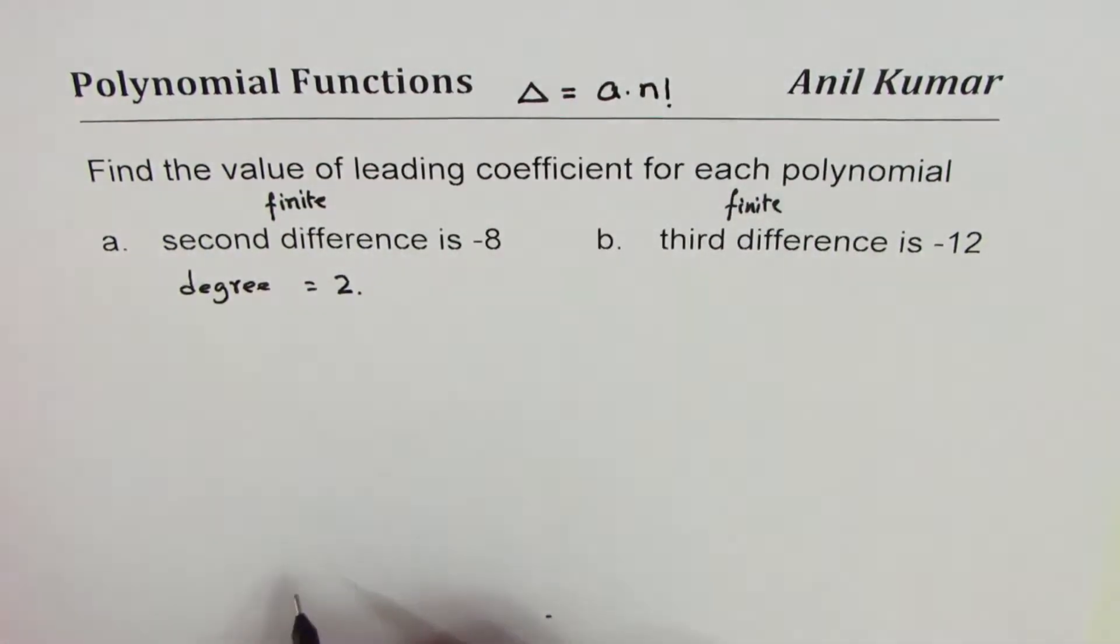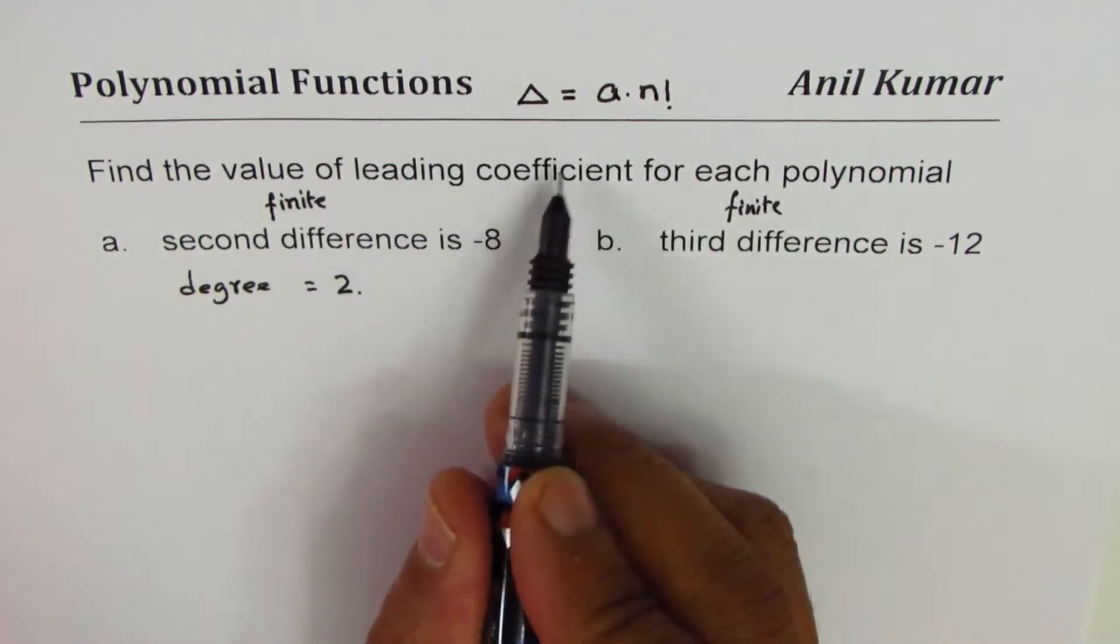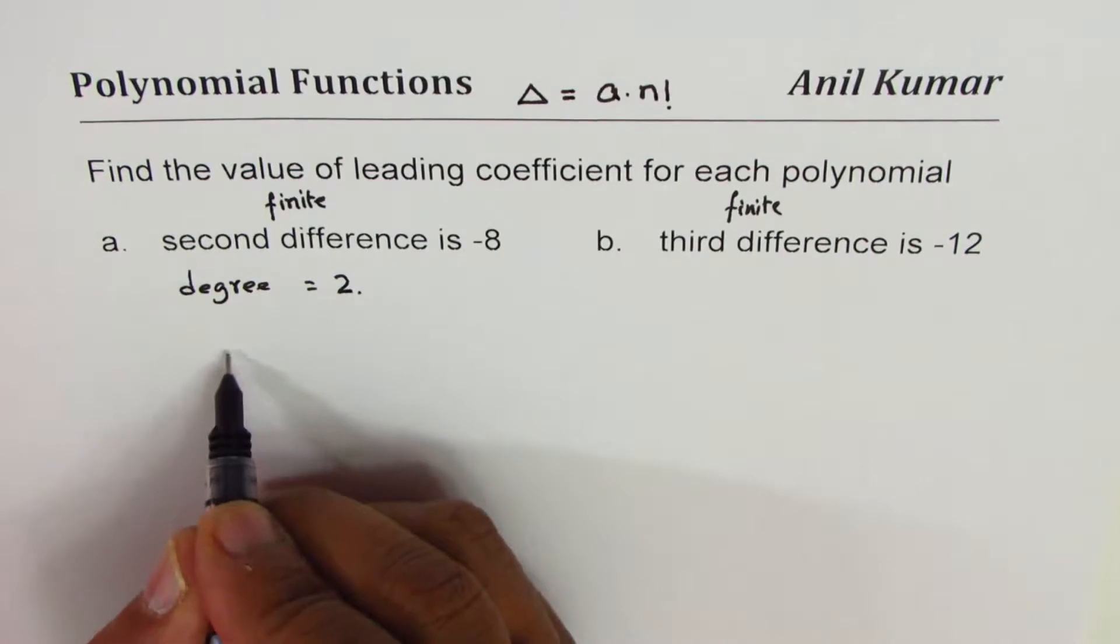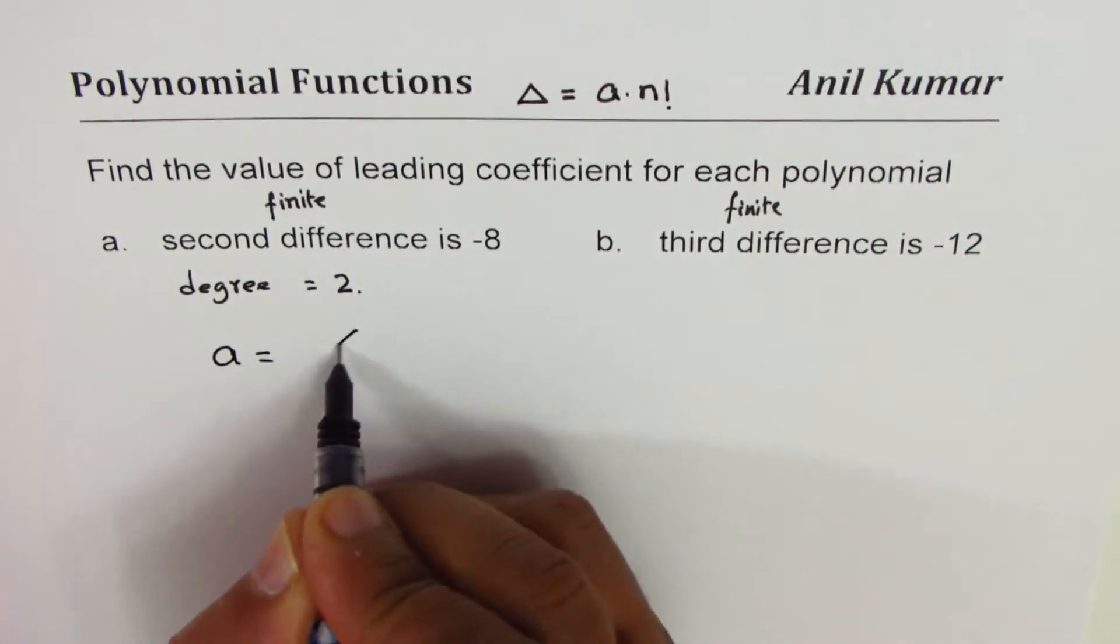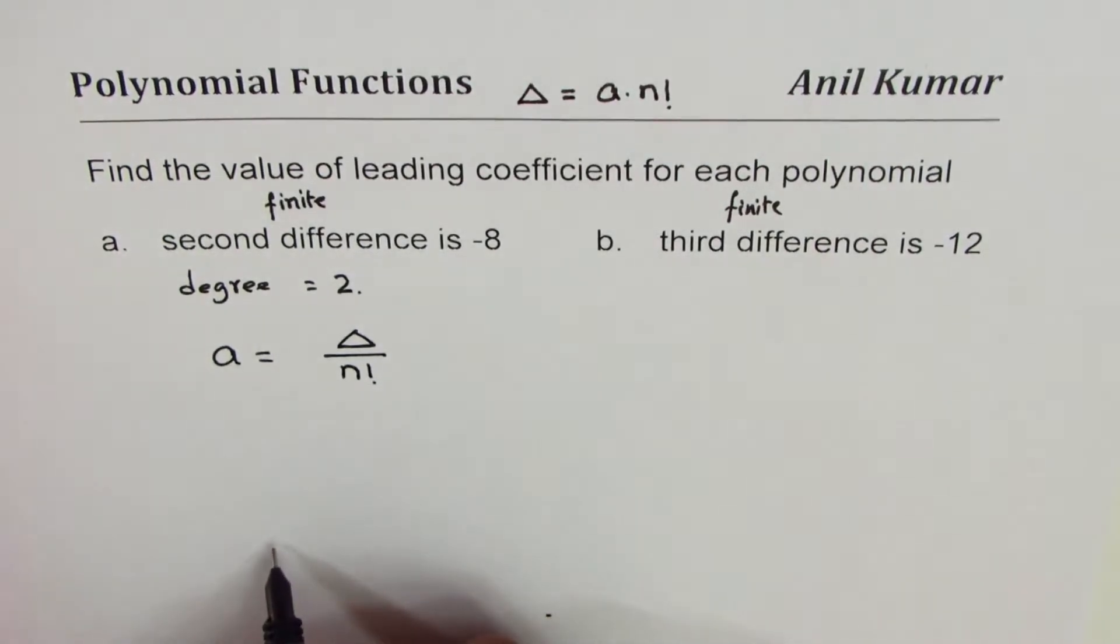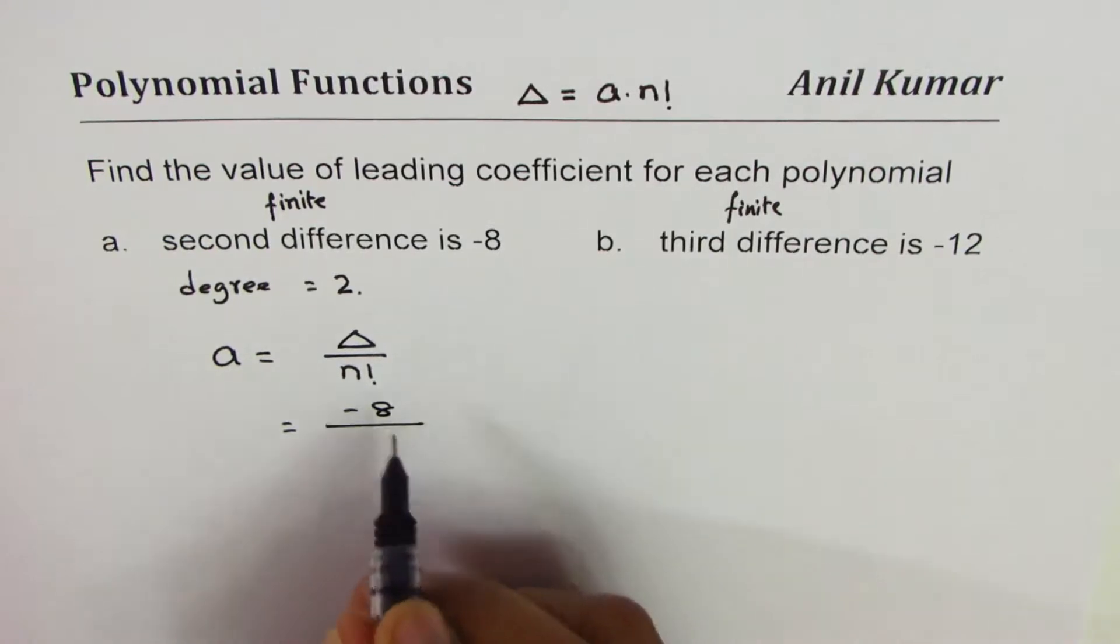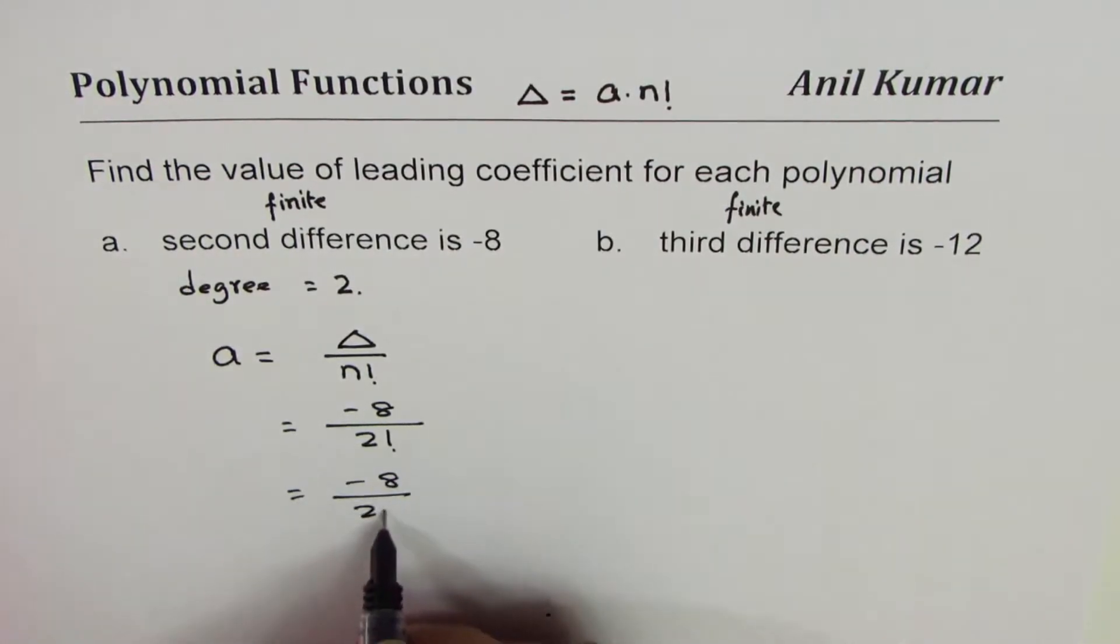In our case we need to find leading coefficient, so we can rearrange this formula. a is finite difference divided by n factorial. We are given finite difference as -8 and is second difference to 2 factorial. Now that means -8 by 2 times 1.